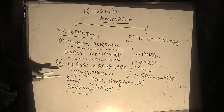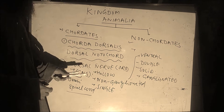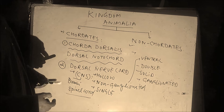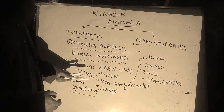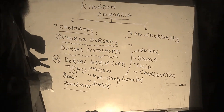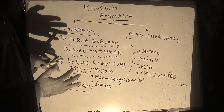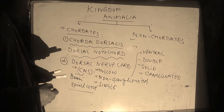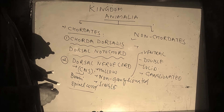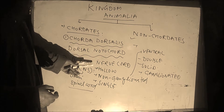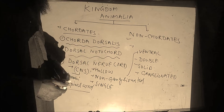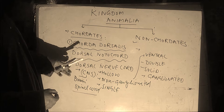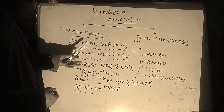Regarding the hollow structure: in Chordates, the nerve cord is hollow, meaning inside our Brain and Spinal Cord there are cavities. In the brain, these are called ventricles, whereas in the Spinal Cord it is the Central Canal of the Spinal Cord, also known as Neurocoel.